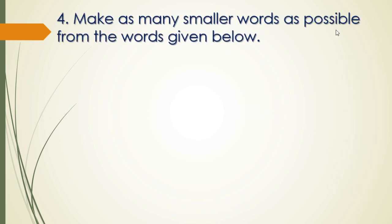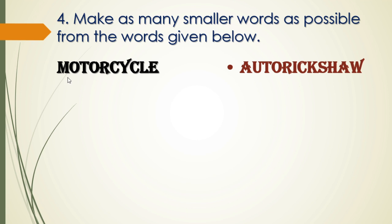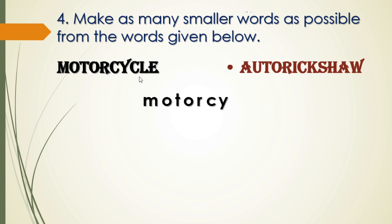Make as many smaller words as possible from the words given below. Two big words are given: motorcycle and auto rickshaw. We have to take the alphabets from these words and make small words with meaning — from inside this big word only, no letters from outside. The word motorcycle is spelled: M-O-T-O-R-C-Y-C-L-E. Now we will use some alphabets to make new smaller words.